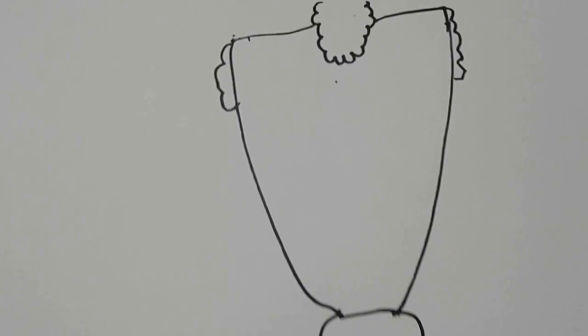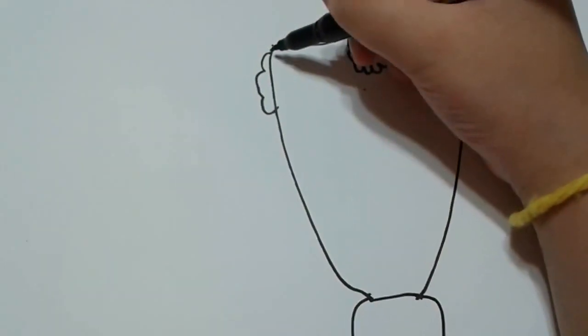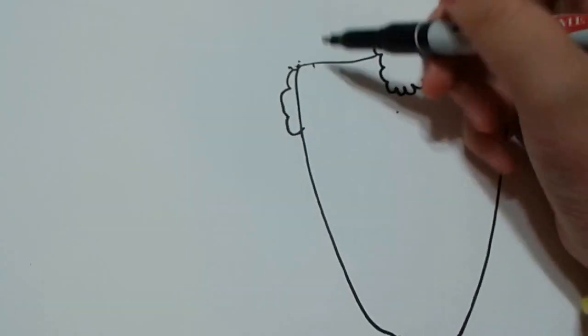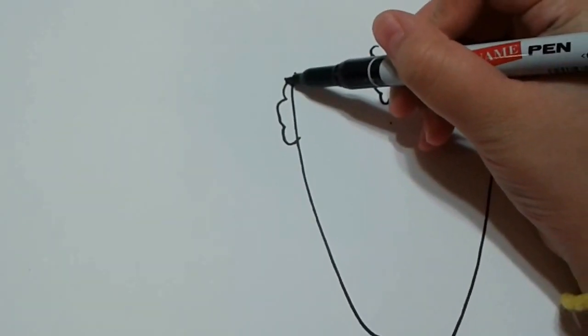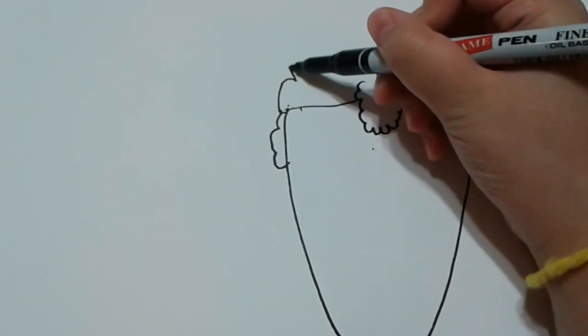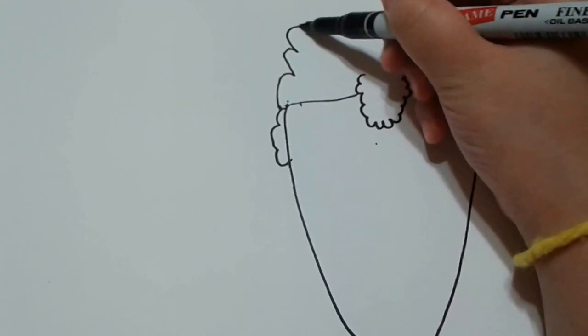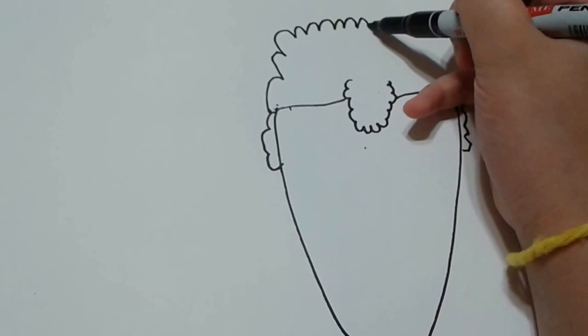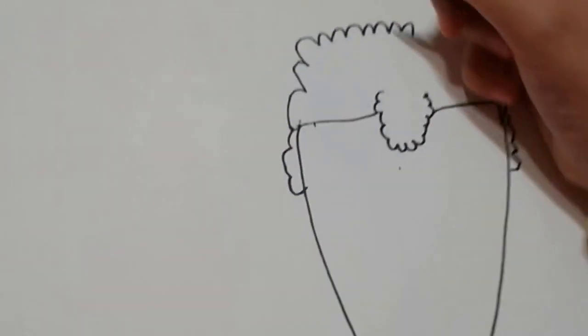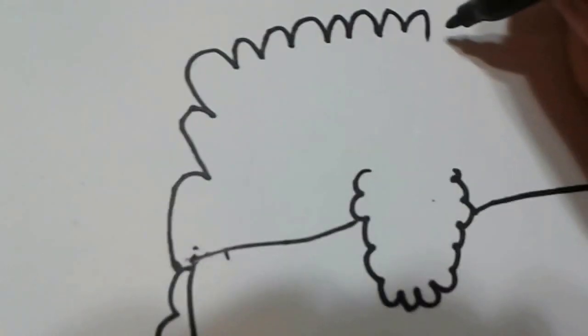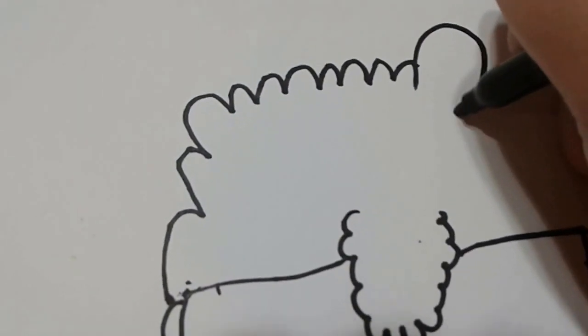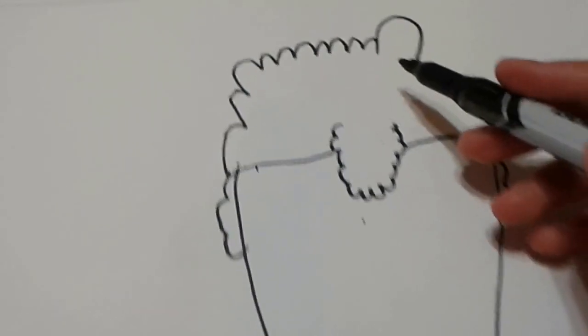So now we're going to draw a rainbow curve like this. Then you want to stop. Then just draw a big cherry here.